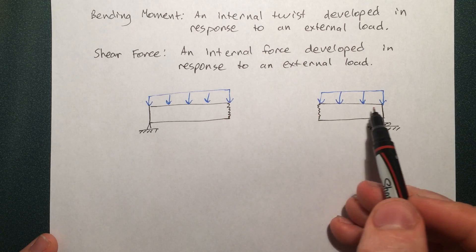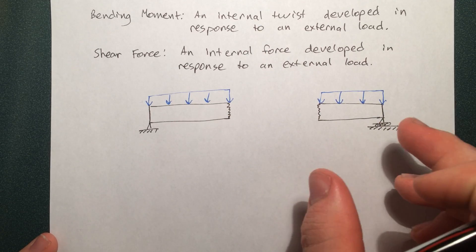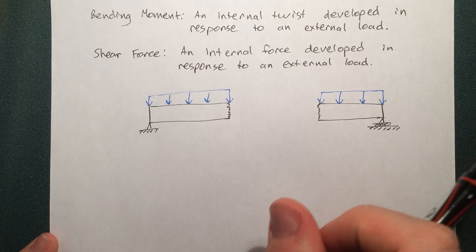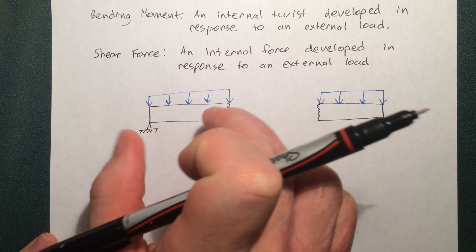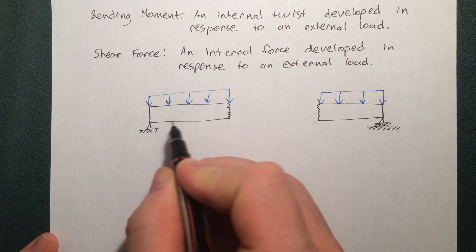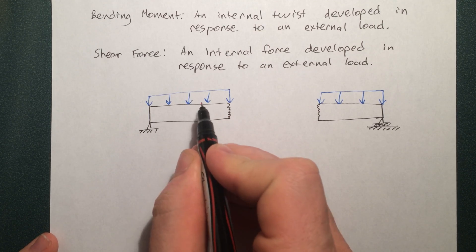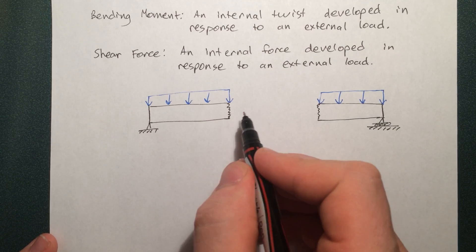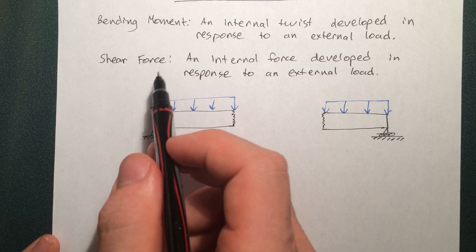We should be able to make an arbitrary cut anywhere in this beam and have the pieces that we didn't include in that cut on the side. And that piece that we did include in the cut, that whole piece should be in equilibrium. And as you can see here, this piece is not in equilibrium right now because this force will cause it just to either shear straight down or to twist around. So we need to develop an internal reaction in response to that, and that's exactly what we call a bending moment and shear force.